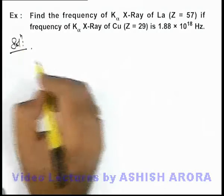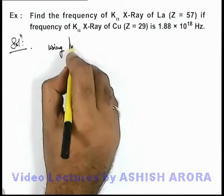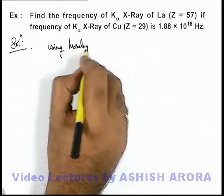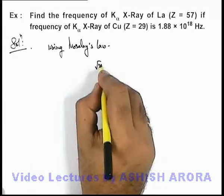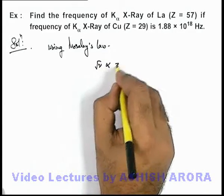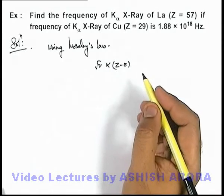Now in the solution, we can write directly using Moseley's law. We can write for a given transition, square root of frequency is directly proportional to z minus sigma, which is the effective atomic number.